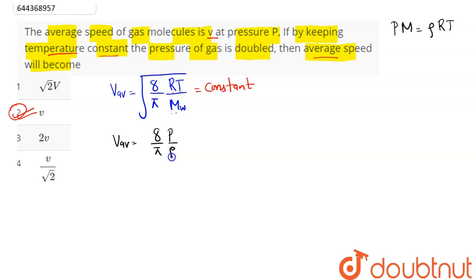is constant and M is constant. Hence, pressure is proportional to density. This means the new average speed v' can be written as: new pressure is 2P and new density becomes